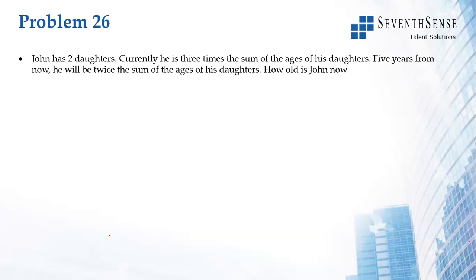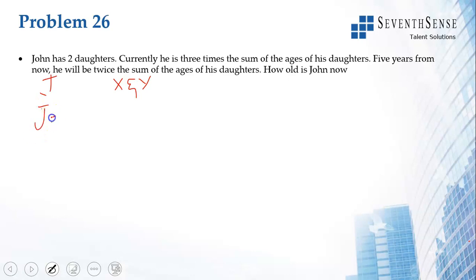John has two daughters — we will take them as x and y. Currently, let us say John's age is j, which is equal to three times the sum of the ages of his daughters, so j = 3(x + y).